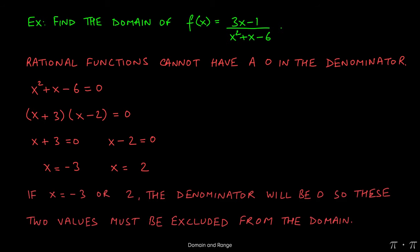Now what that means is, if x is either equal to negative 3 or positive 2, the denominator of the original function 3x minus 1 over x squared plus x minus 6 will be zero. So these two values must be excluded from the domain. We have to remove them.